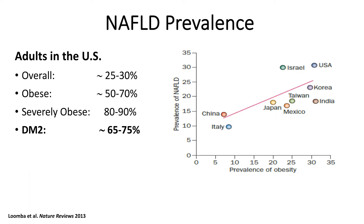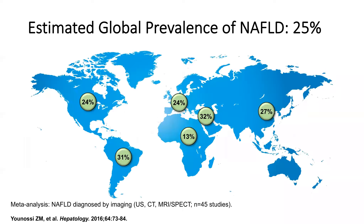This is not just a problem in the United States — it's a global problem. Different countries have different rates of fatty liver disease, and these rates correspond to the rates of obesity in those countries. Unfortunately, the United States has high rates for both NAFLD and obesity. The global prevalence is about 24–25%, with the highest prevalence in South America and Middle Eastern countries such as Saudi Arabia, and the lowest prevalence in Africa.